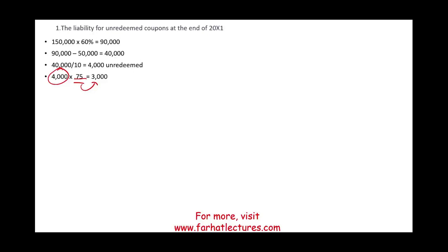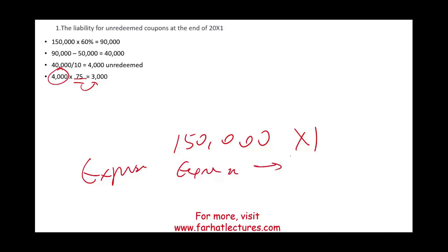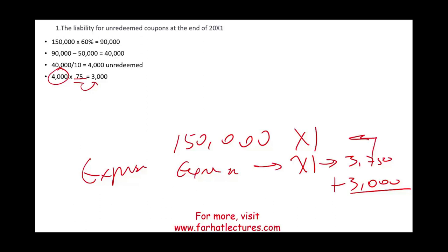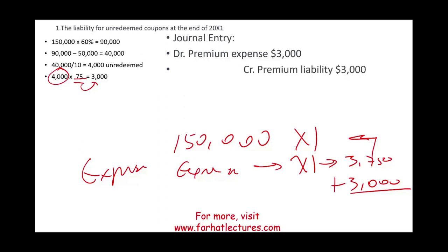We have to record this $3,000 expense now because we sold 150,000 units in year X1, and the expense related to those sales must be recorded in X1 to comply with the matching principle. We already recorded $3,750 of expense on the prior entry. Now we need to record an additional $3,000, so we debit premium expense and credit a liability — because it's our obligation to give those boxes out in the future.